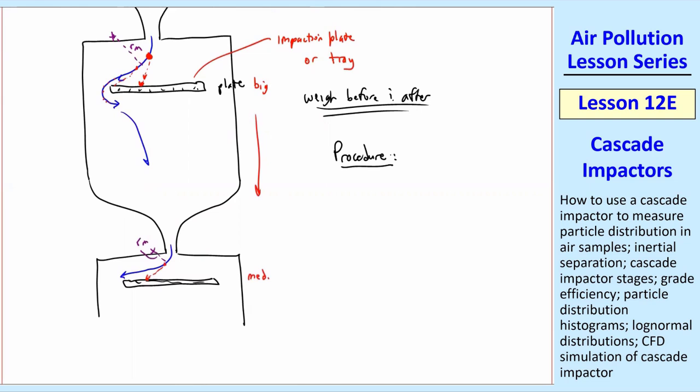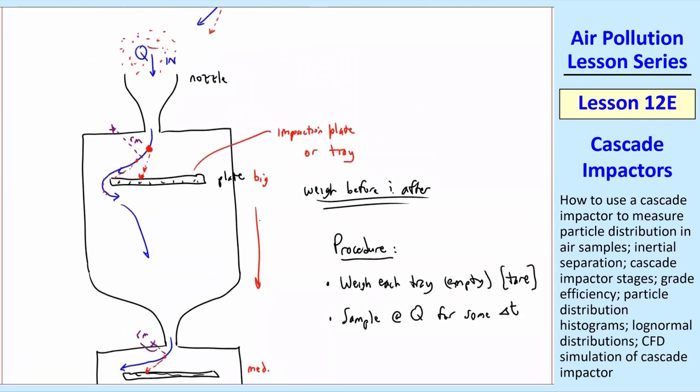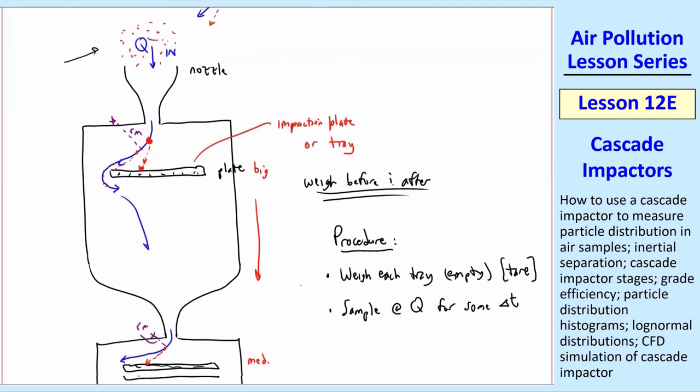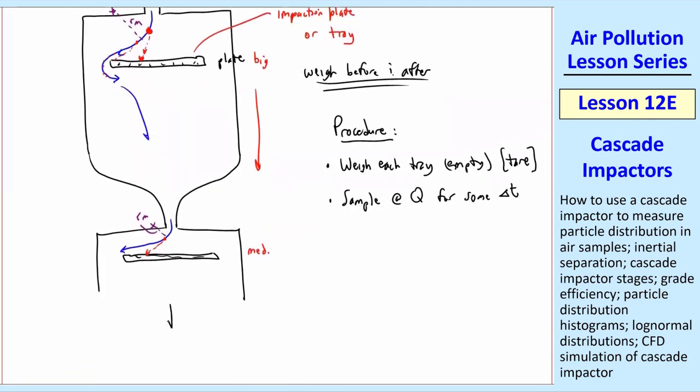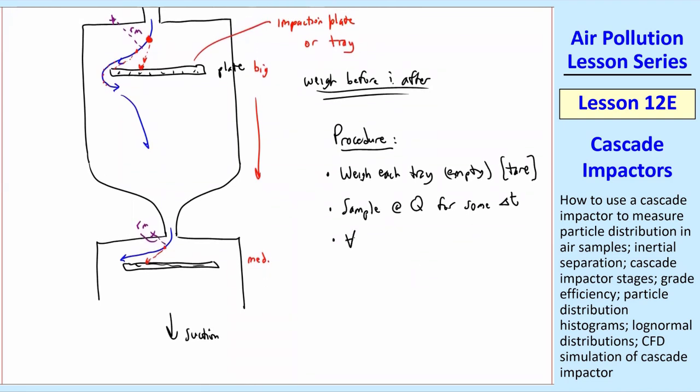So here's the procedure to actually use one of these. You weigh each tray empty. That would be your tare weight. You sample at this flow rate Q that we have up here. You're sucking it in. At the bottom of this, you have some suction device. You sample at Q for some delta T, and then you calculate the volume, Q times delta T. This is the total volume of air that's sampled. When you're done, you weigh each tray again, and you subtract the tare weight.